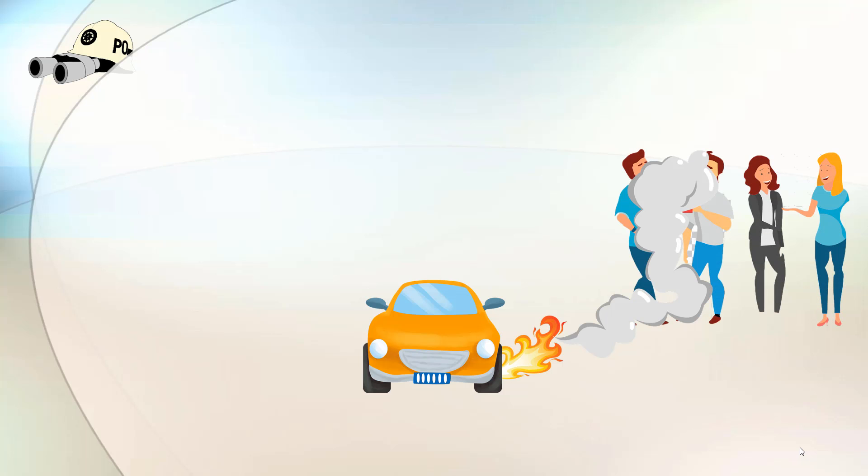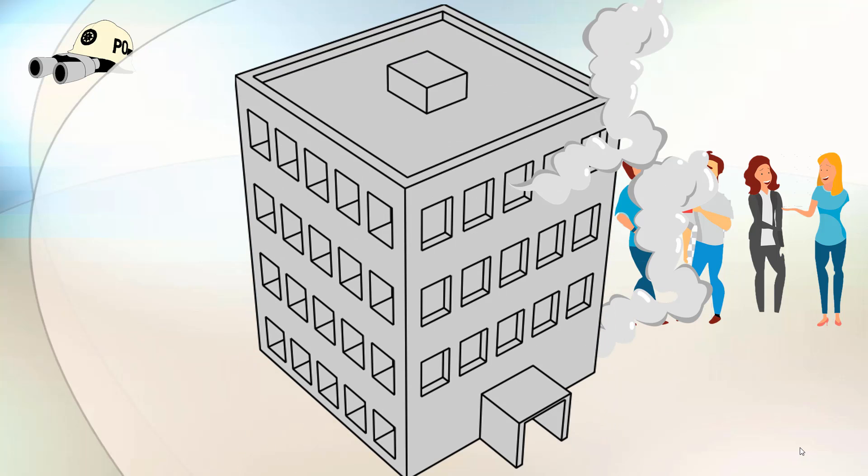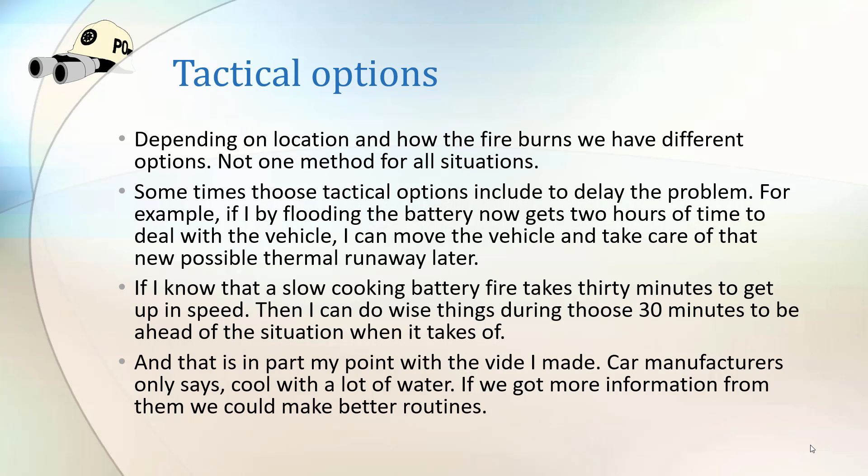And hydrogen fluoride, when it affects people, needs a special antidote to treat them. And if it was a leaking cylinder of hydrogen fluoride, we would treat this as a hazmat call. And if we put this hazmat call in a building, we have other things that would make us have to prioritize what to do first and what not to do. And depending on location and how the fire burns, there are different options.